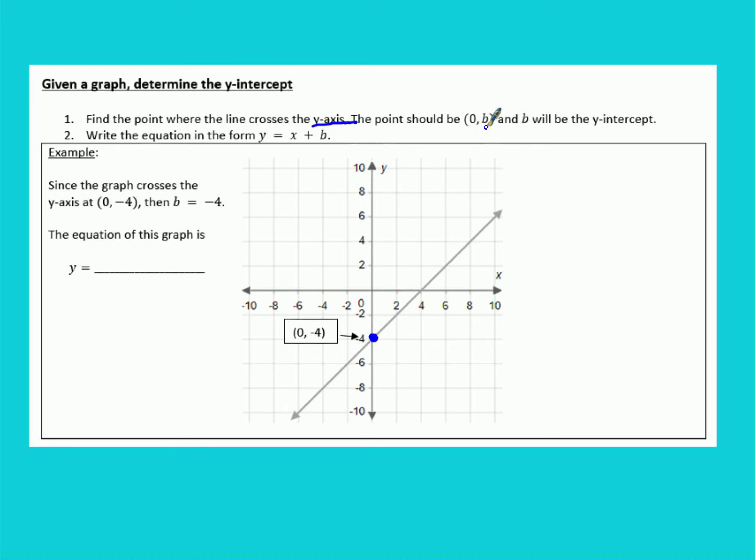So this point is written in the form 0, b and b is what our y-intercept is. So that means that our y-intercept here is negative 4. And then you just have to write the equation using that form y equals x plus b. So in this case the graph of this equation would just be y equals x minus 4.